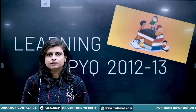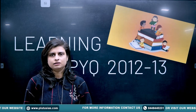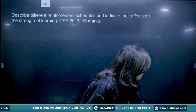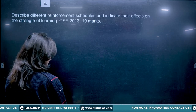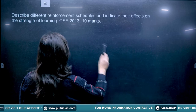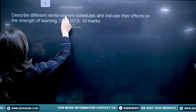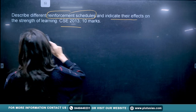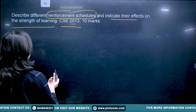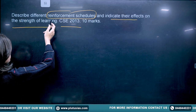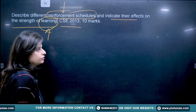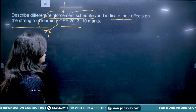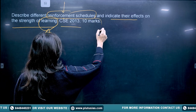Why 2012 and 2013 both at the same time? Because there was only one question each year, so there was no point making different videos for them. The first question is from CSC 2013: 'Describe different reinforcement schedules and indicate their effects on the strength of learning.' This question covers learning and reinforcement from the chapter on Learning.